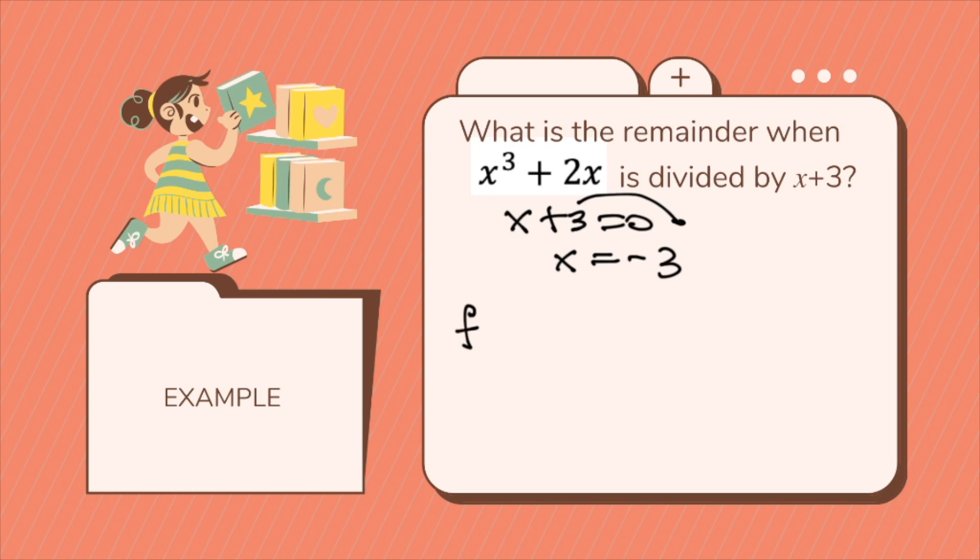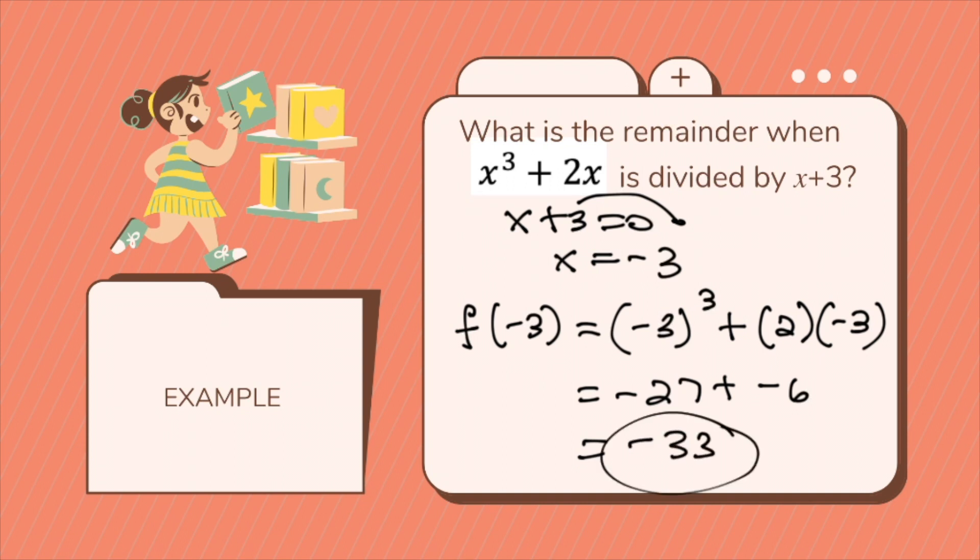And then you will have f negative 3, substitute negative 3 cubed plus 2 times negative 3. You will have negative 3 cubed, you'll get negative 27, and then you will have your 2 times 3, you have negative 6. So you'll have negative 33. Hence, the remainder when x cubed plus 2x is divided by x plus 3 will be negative 33.